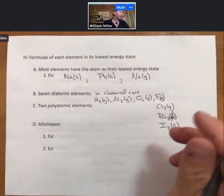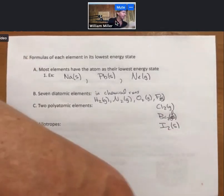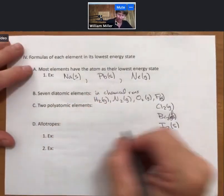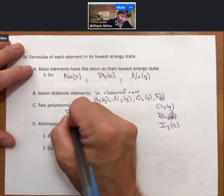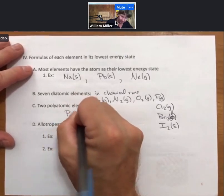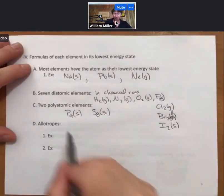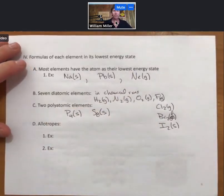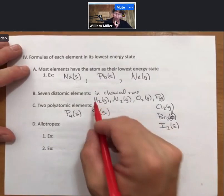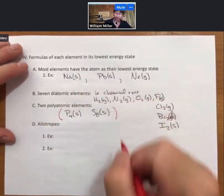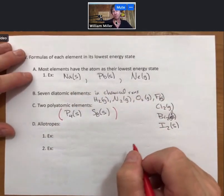There are two polyatomic elements. Those are going to be sulfur and phosphorus. P4 and S8. And if these two ever come up, we will tell you about it. You don't have to remember those. You do have to remember the diatomics. And when you don't have to remember something, but it is useful to know, I will put it in parentheses.